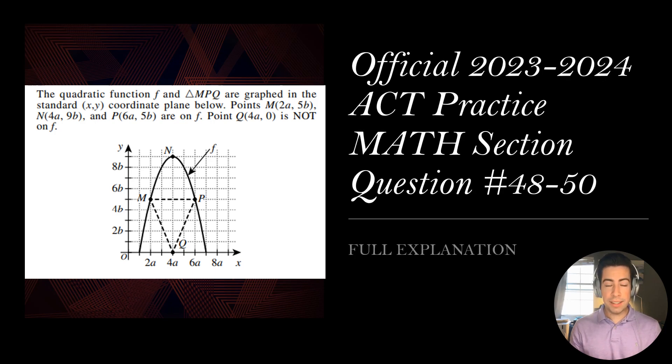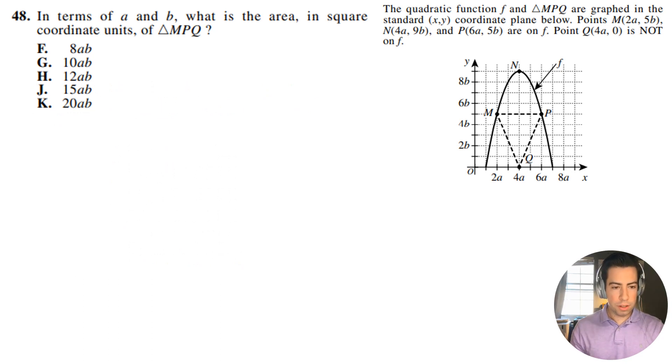All right, questions 48 through 50, and this time we're going to do three questions in a row, so let's get right into it. In terms of A and B, what is the area in square coordinate units of triangle MPQ? They give us this whole wall of text, but we can just ignore it and go straight to here. So what is this area here for this triangle?